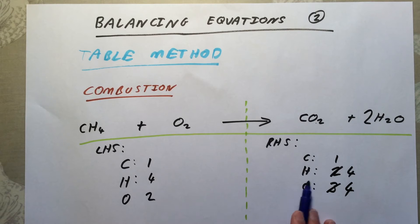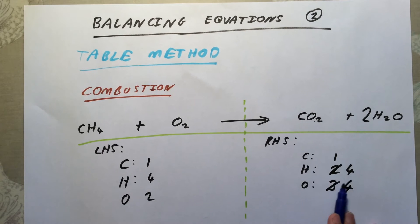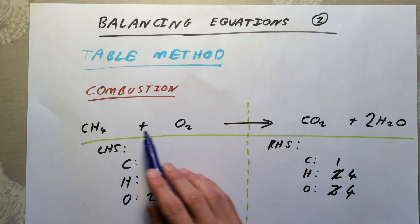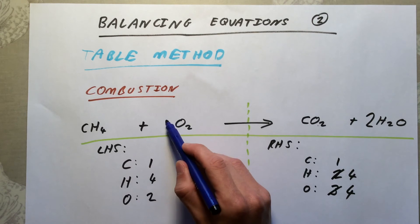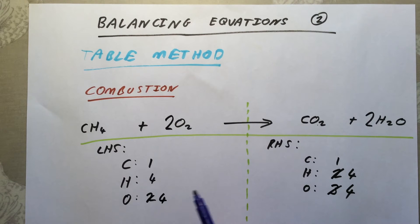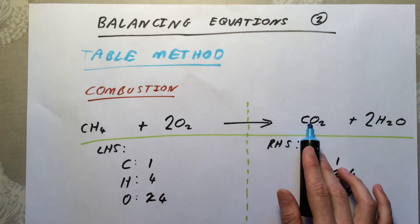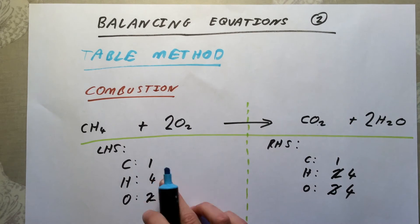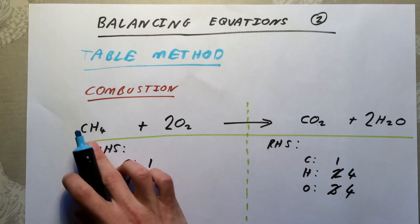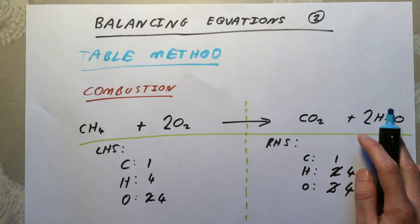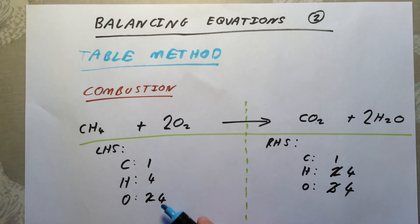Last thing I need to check now is my oxygens. I've got four oxygens on the right-hand side but only two on the left-hand side. So I simply need to find out where my oxygens are on the left, which is here - double that up, and that will change that to four. So CH4 plus two lots of O2 gives me carbon dioxide and two lots of water. Make sure you just check through at the end: I've got one and one carbon - that's fine. I've got four hydrogens and four hydrogens - that's fine. And I've got four oxygens and four oxygens. This is balanced.